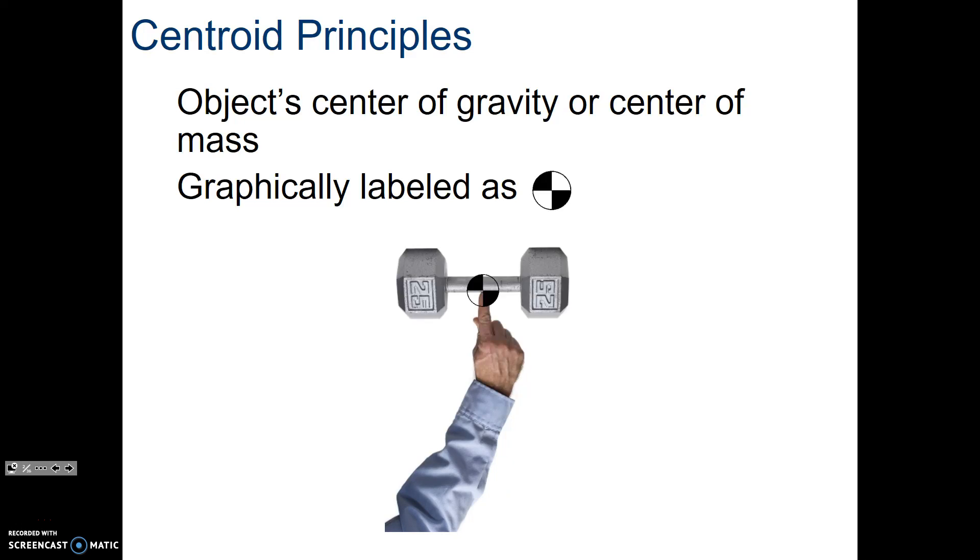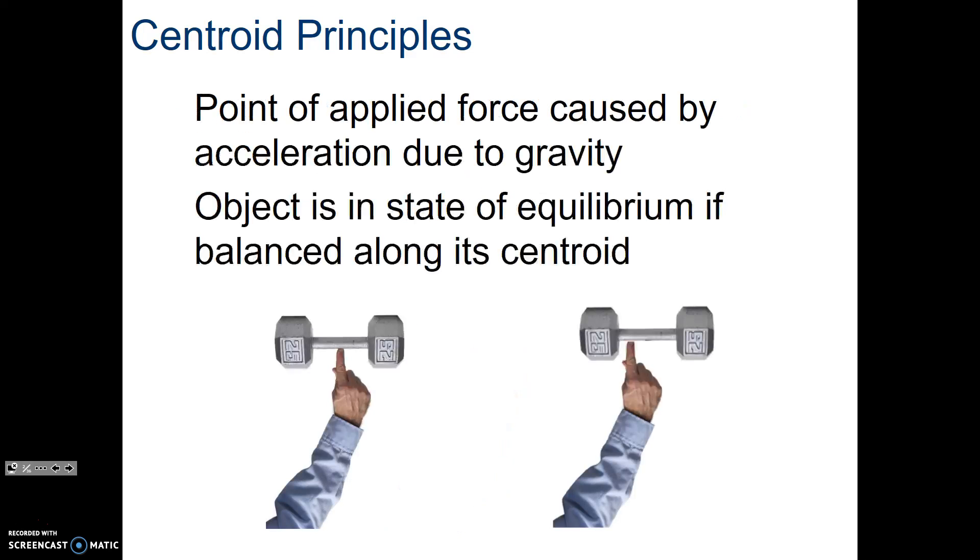Centroid is also known as the center of gravity. It's usually labeled with this symbol. This is the center of where the mass is. You can think of it as if you could concentrate all the mass at that location, it would behave the same as if it weren't all concentrated.